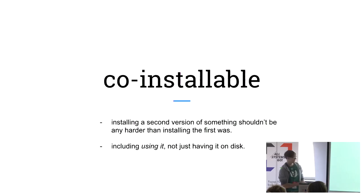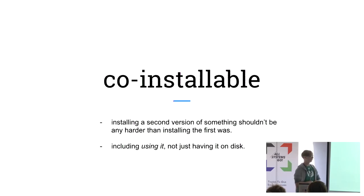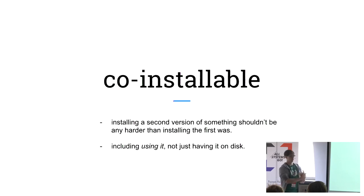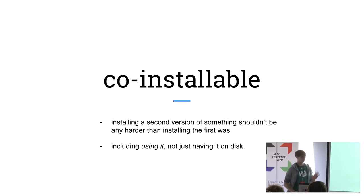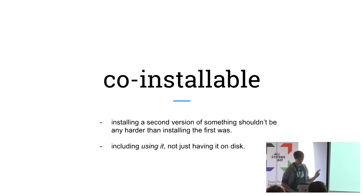So here's an attempt and here are some definitions. I think we should talk about the ability to co-install things. The definition I would offer is: anytime I install one thing, installing a second version of the same thing should not be any harder than installing the first thing was. And that includes using it — not just having it on disk, but being able to use it. This sounds trivial but, of course, nothing is easy.